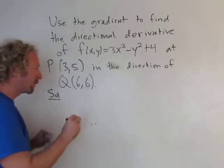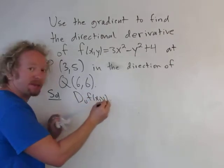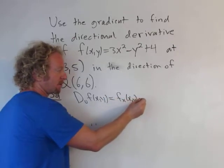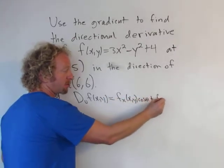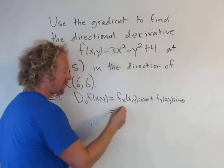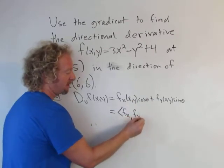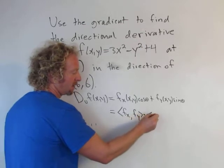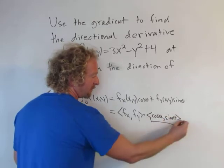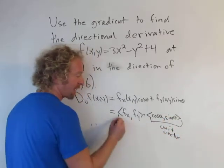Just really quick, if you recall from before, the directional derivative in the direction of a unit vector was written as the partial with respect to x times cosine theta, plus the partial with respect to y times sine theta. You can think of this as a dot product — this vector dotted with this vector. This is a unit vector, and this here is the gradient.